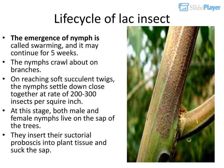The emergence of nymphs is called swarming, and it may continue for 5 weeks. The nymphs crawl about on branches, and on reaching soft succulent twigs, they settle down close together at a rate of 200 to 300 insects per square inch. At this stage, both male and female nymphs live on the sap of the trees, inserting their sectorial proboscis into plant tissue and sucking the sap.